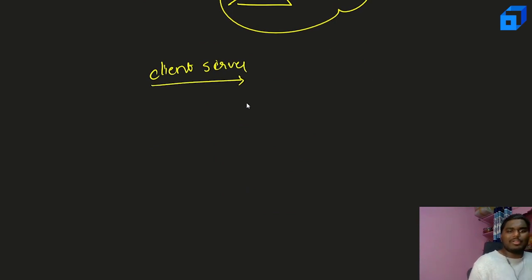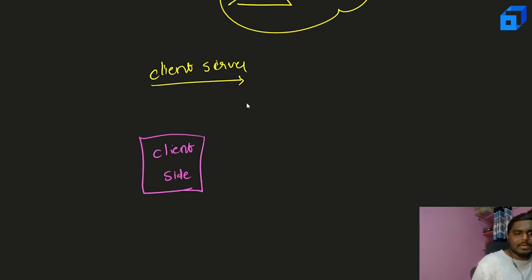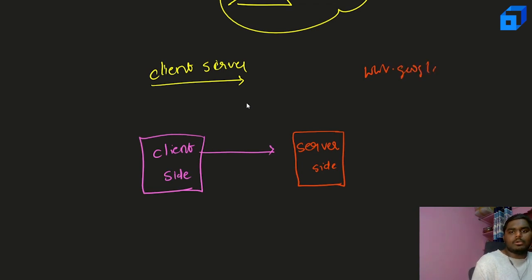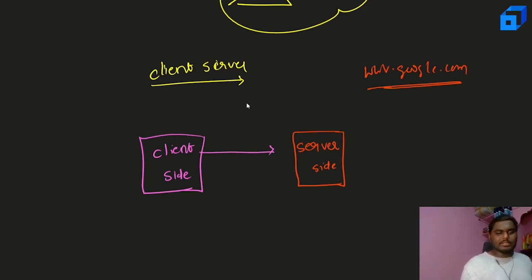Now let's see client-server architecture in detail. On the client side, you make a request to a server. A request can be anything — for example, visiting www.google.com, or searching with a CodeChef username expecting all the details of that particular user. The server side typically contains databases and business logic to process those requests.